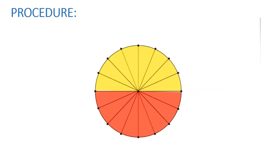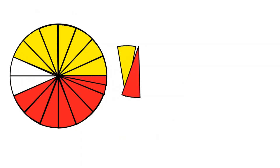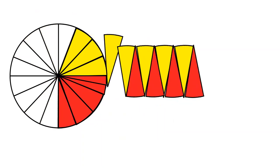Cut these sectors, arrange and paste them alternately as it is shown on the screen. Make sure no spaces are left in between the parts.